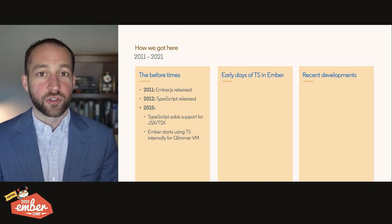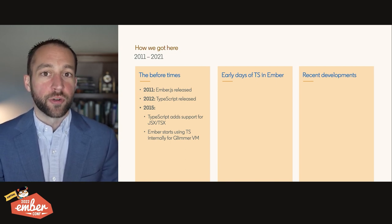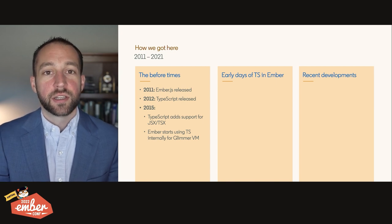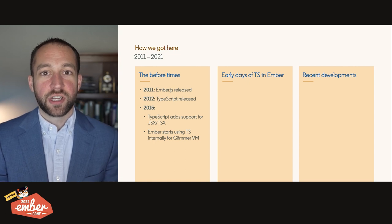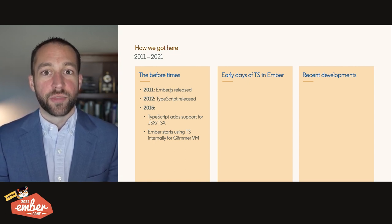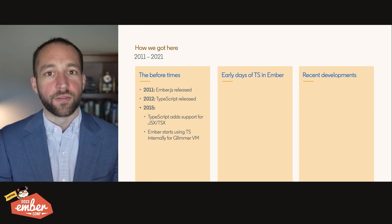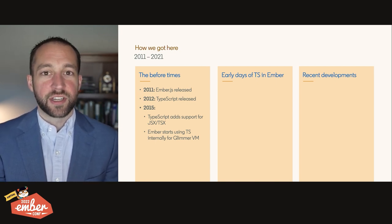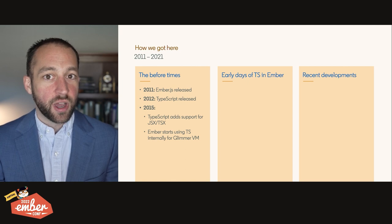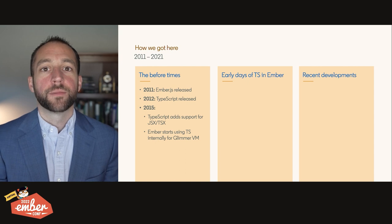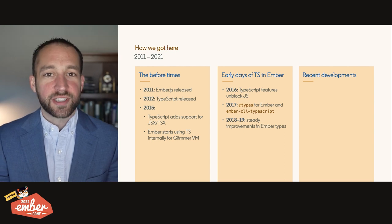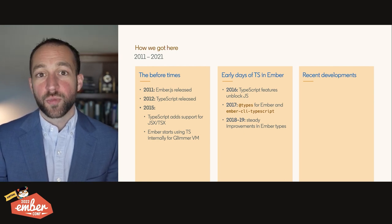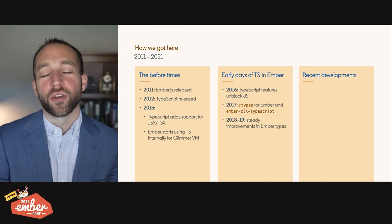Ember itself started using TypeScript, and TypeScript put out support for JSX in the form of TSX — typed templates — which really for the first time gave front-end web developers the ability to have end-to-end types for their JavaScript code. Really powerful. And at the same time, Ember began investing in the internal implementation of its rendering library for its template layer, the Glimmer VM, in TypeScript. That brings us to the transitionary period, the early days.